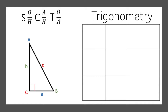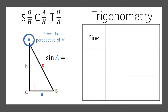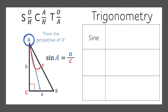So here's a general triangle. First, we're going to talk about sine. If we talk about the sine of A, what we're doing is we're looking from the perspective of A. Sine says to look across to the opposite side, take the measure of the opposite side, and divide that by the measure of the hypotenuse. That's the sine of A.